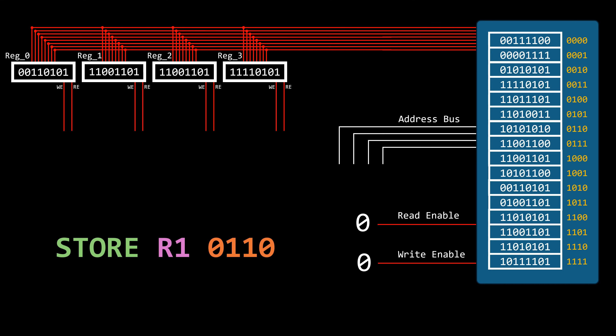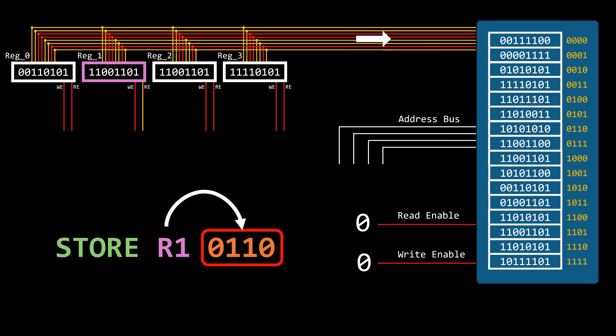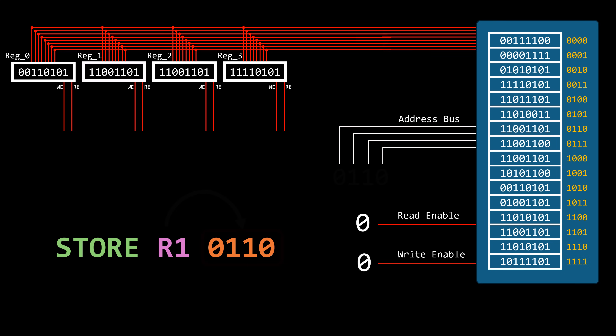With a store instruction, we perform the opposite action. For example, this instruction directs the computer to store the current value held in register 1 into memory location 0110. So instead of reading from a memory location, we read from a register. Activating the respective read-enable input causes the value stored in that register to become the input on the memory data bus. We must also specify the memory address where we want to store the value. Since our objective is to write to memory, we activate the memory write-enable signal, and we've successfully copied a value from a register to memory.